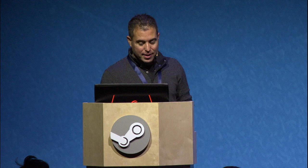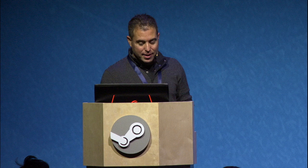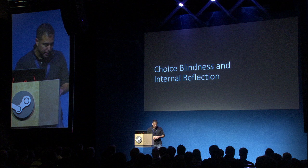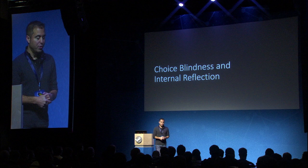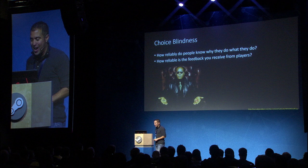Choice blindness and internal reflection. This section is about how reliably do we know why we do what we do — and as a consequence, how reliable is the feedback we receive from players? When players tell us why things are the way they are, how reliable are those assessments of their internal monologues?